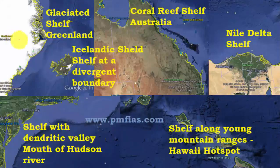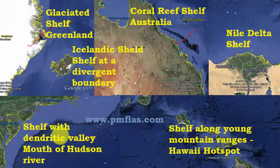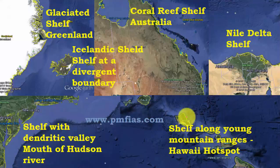In this figure we can see various shelf types. We have the Greenland shelf and the Icelandic shelf, which is part of a divergent plate boundary — the only conspicuous shelf region over a divergent plate boundary. Then we have coral reef shelf in northwestern Australia with the Great Barrier Reef occupying the shelf region. Then we have the Nile delta shelf, along with the shelf with dendritic valleys at the mouth of the Hudson River, and shelves along island mountain ranges such as the Hawaiian hotspot volcanic island chain.